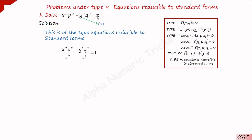Now, take the given problem. The right hand side has z squared, so you have to take z squared to the left hand side denominator. You have to convert the right hand side to either a constant or a number. So take z squared to the denominator. The problem becomes x squared p squared over z squared plus y squared q squared over z squared equals 1.